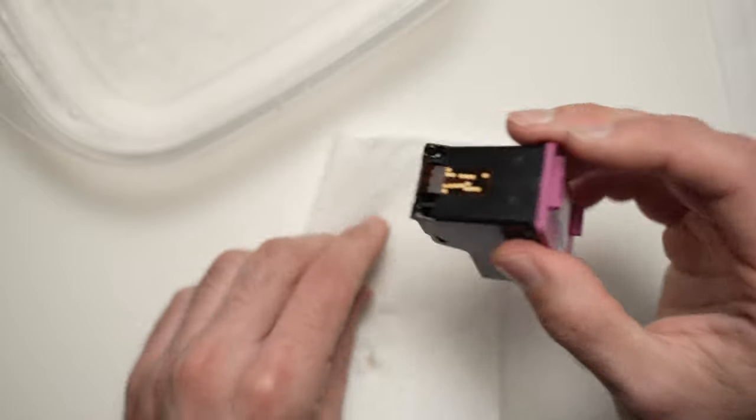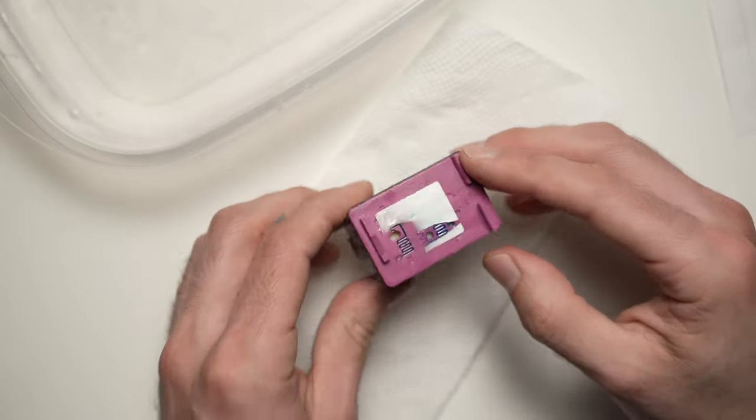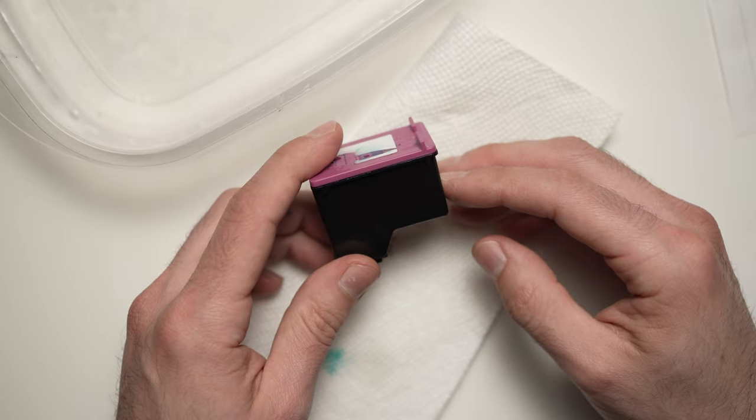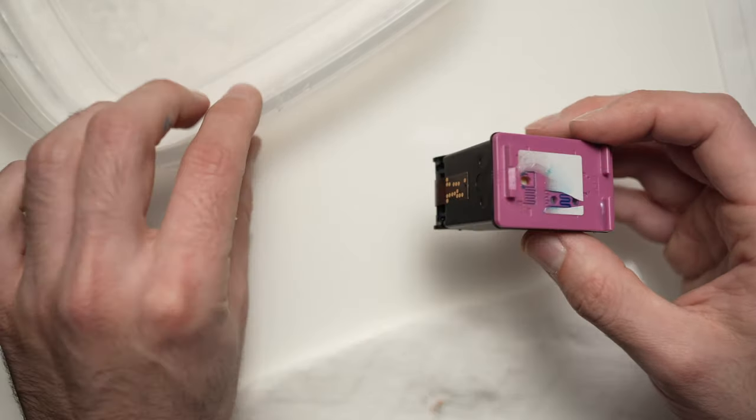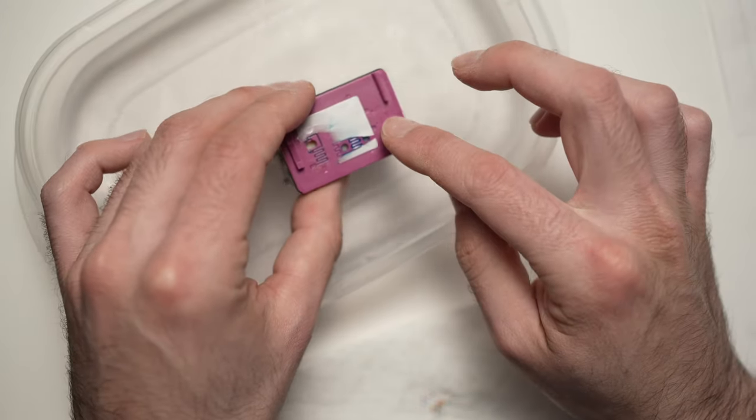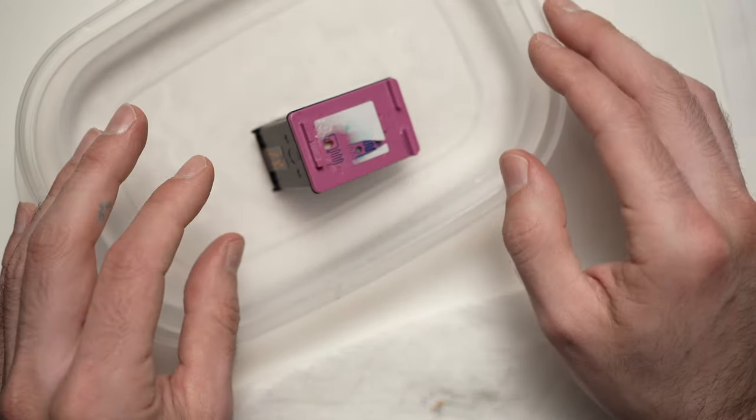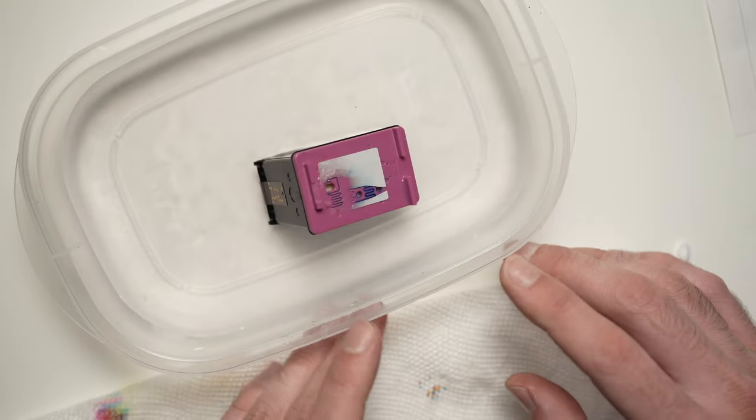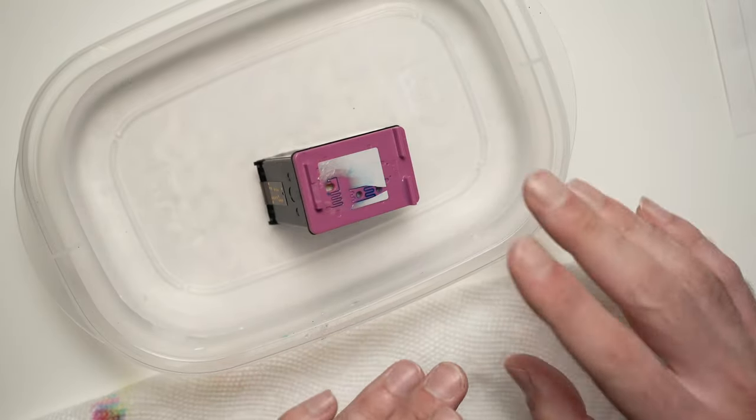Perfect. Now you can insert it back and try your cartridge. If you still have problems, what I suggest you to do is to dip it in the water again, but this time for at least an hour or two. This means that the ink is really dry and it will take more than just a few minutes to make it work again.